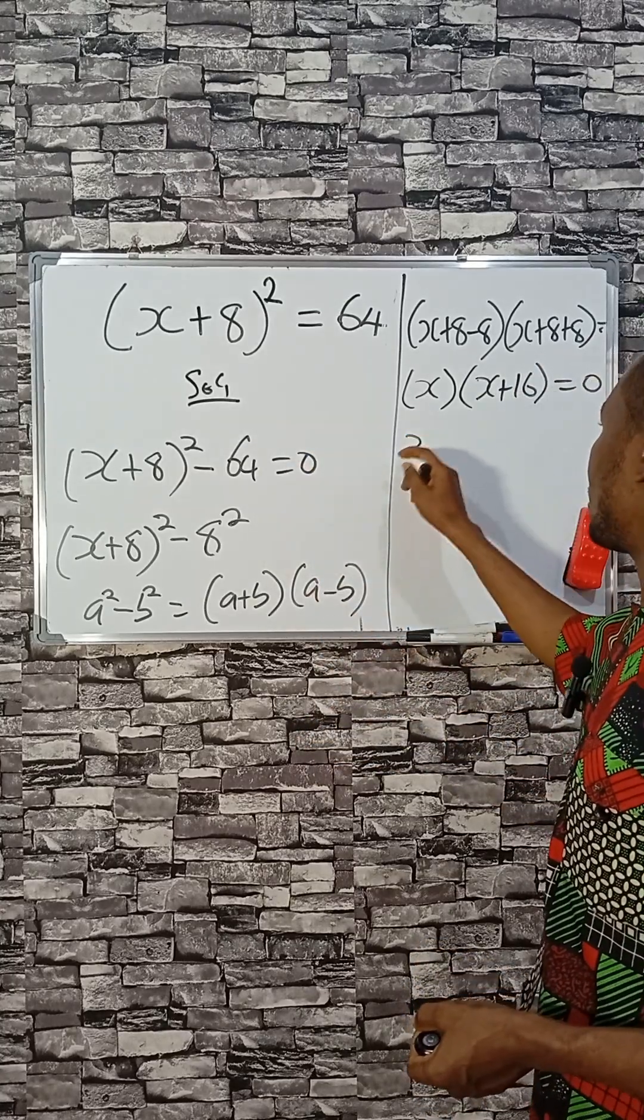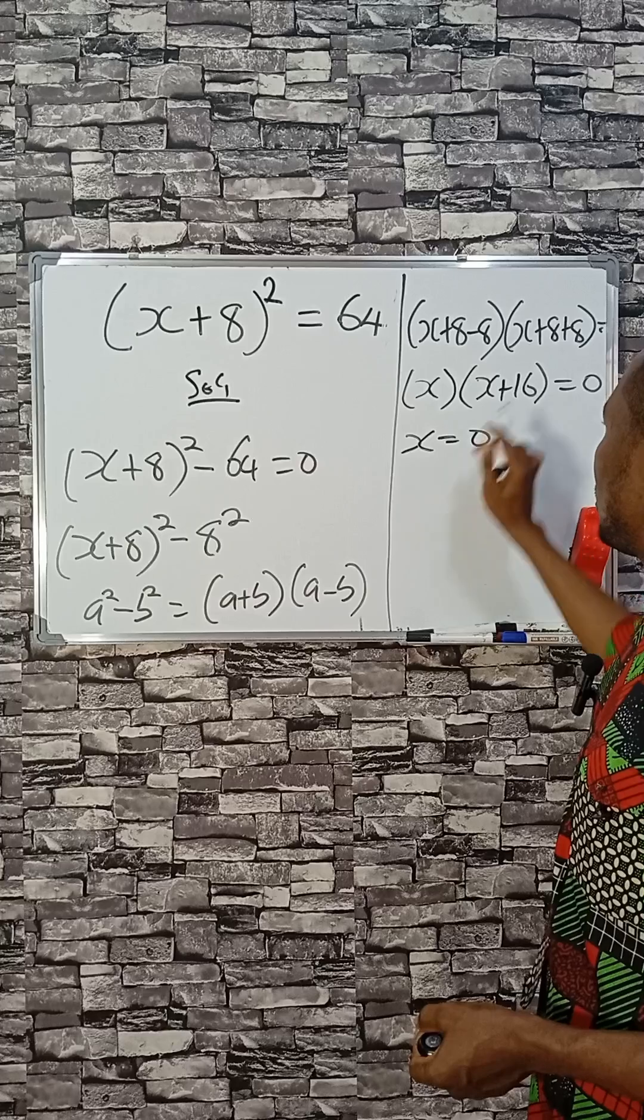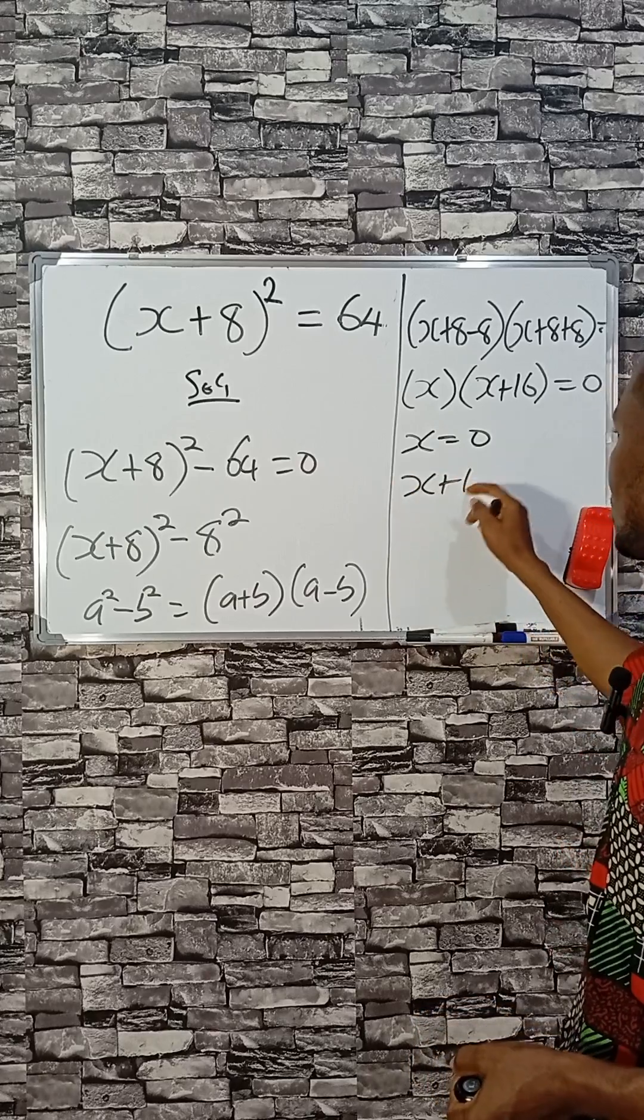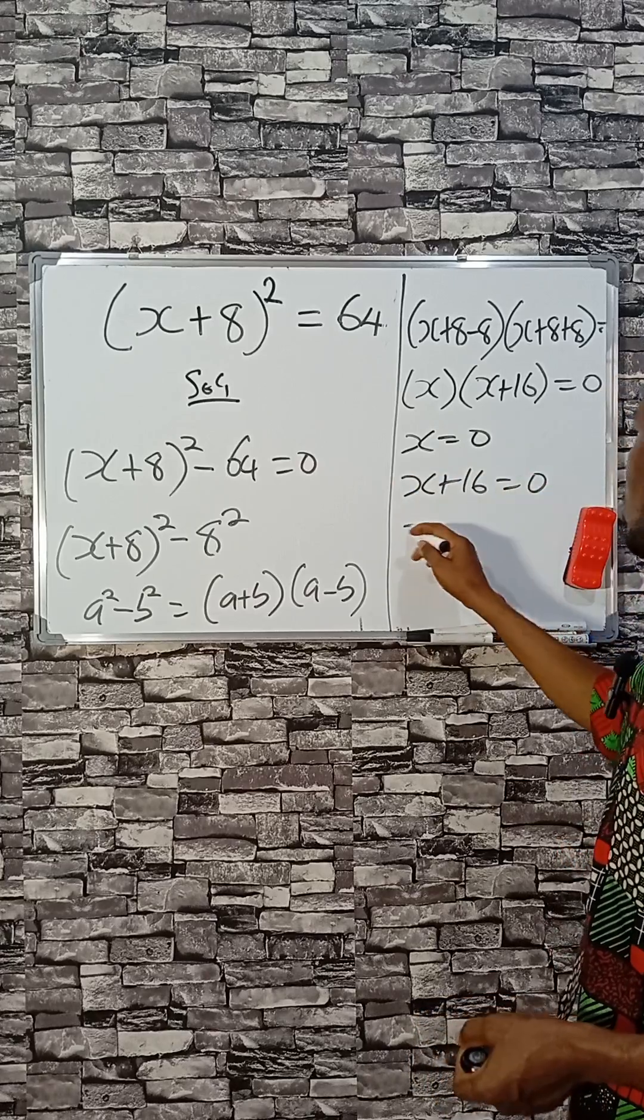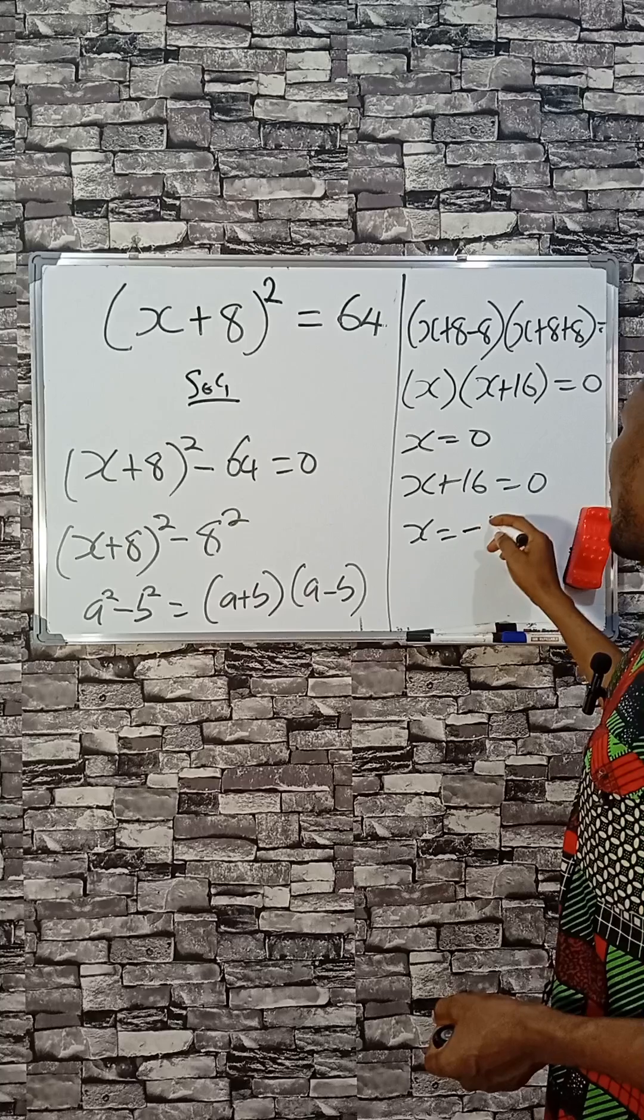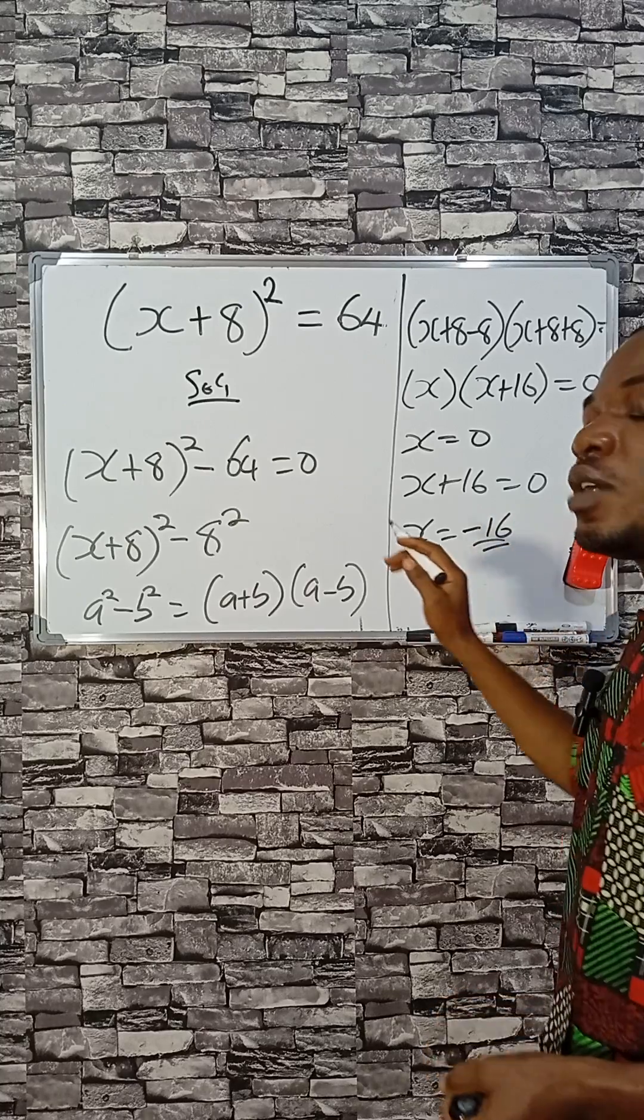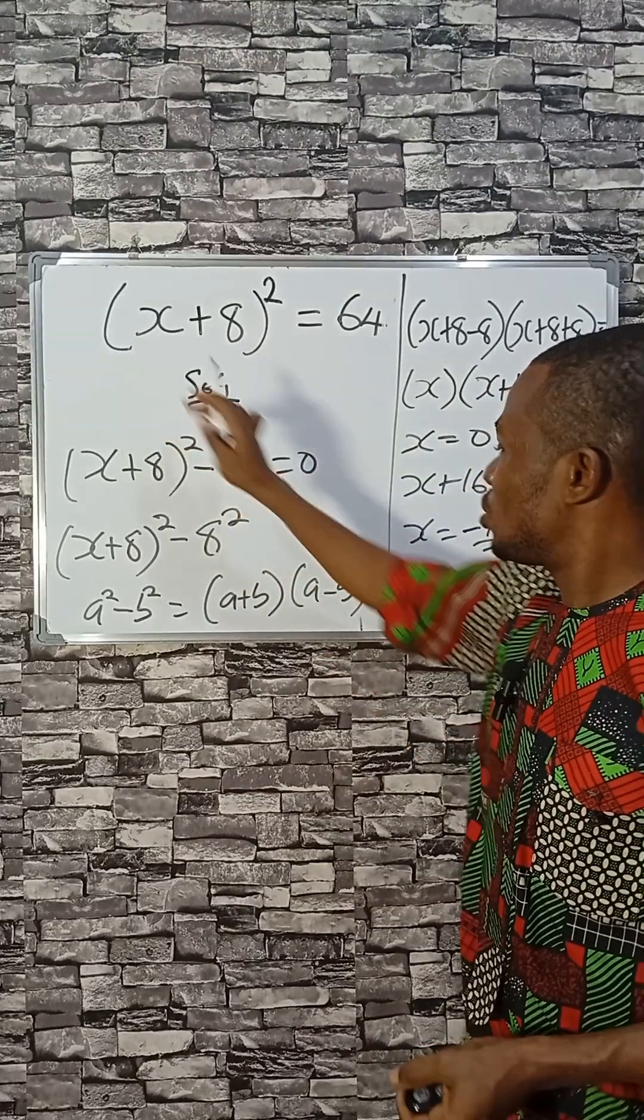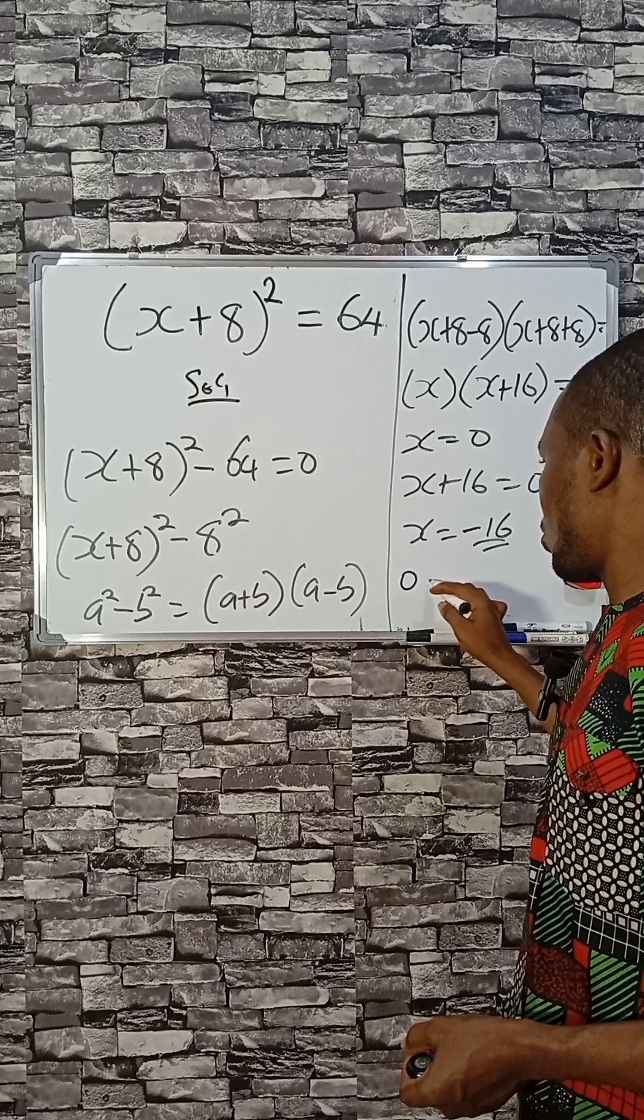X from here equals zero. Then here X plus 16 equals zero, that means X equals minus 16. So the two values of X that can satisfy this equation are zero and minus 16.